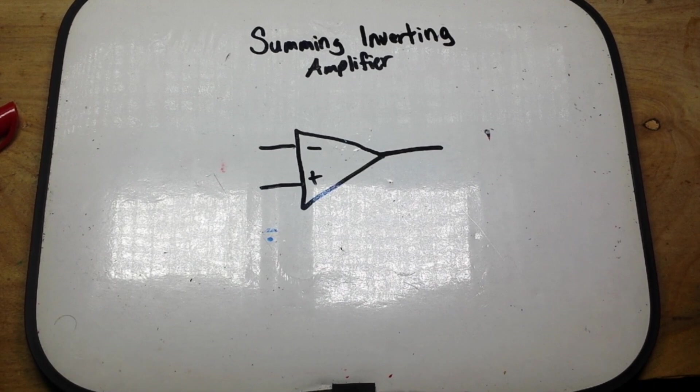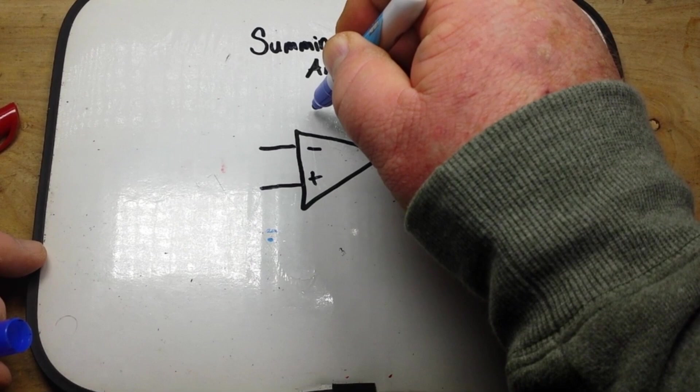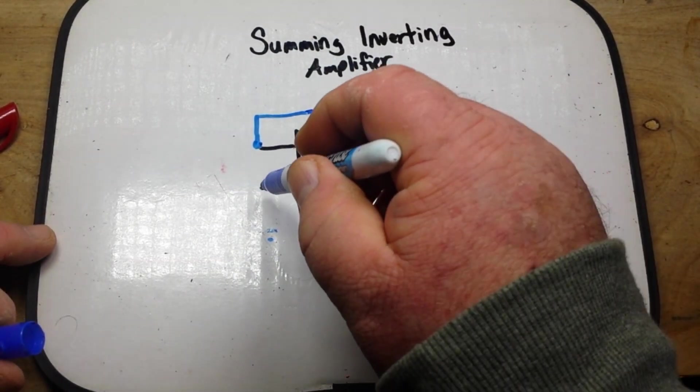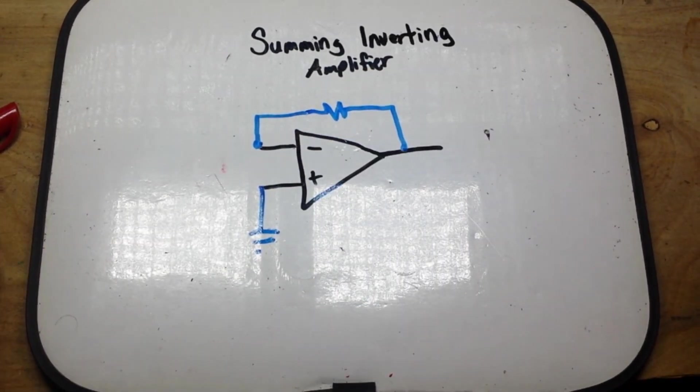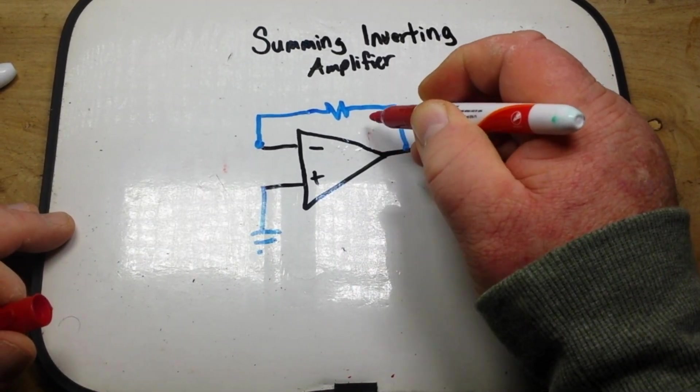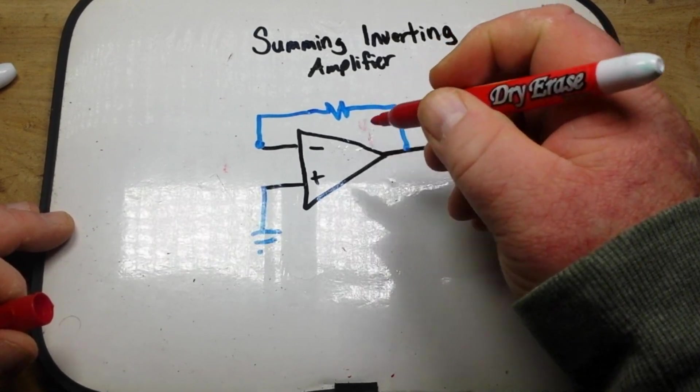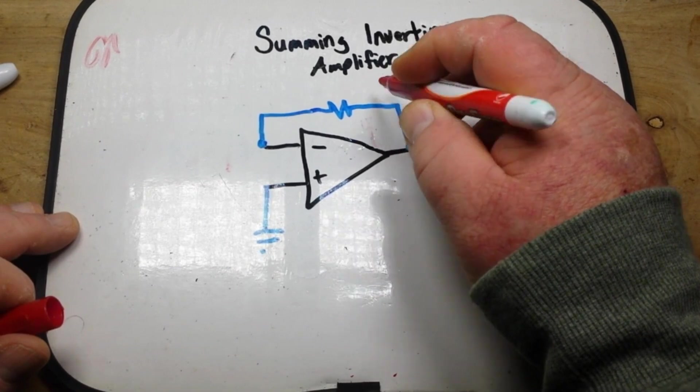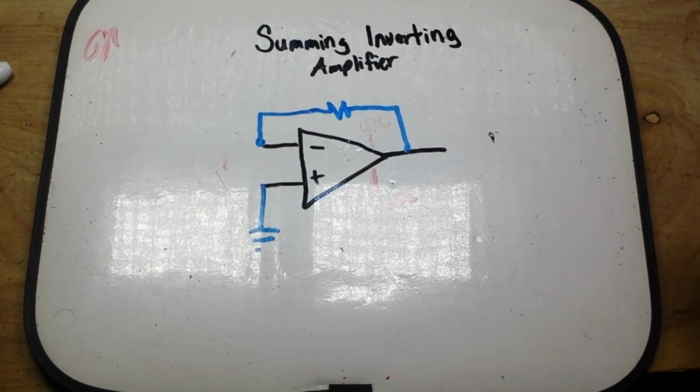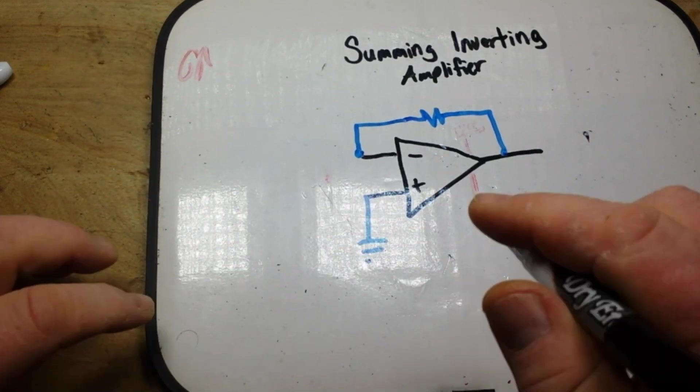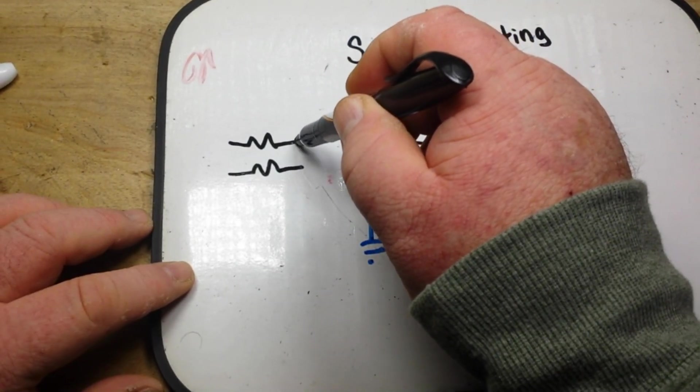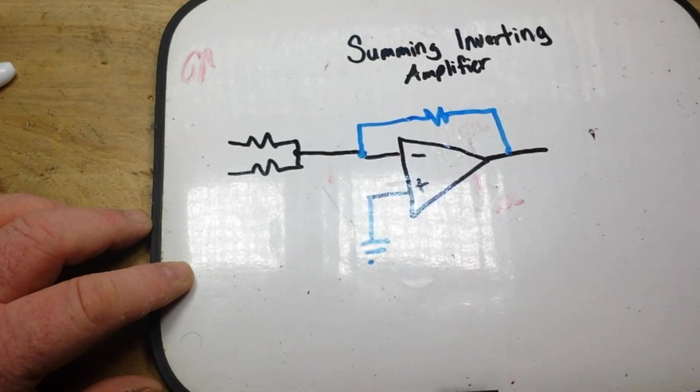So first of all, to make our inverting amplifier we need our feedback resistor into the inverting input, and the non-inverting input we tie to ground. So that is our standard super simple little inverting amplifier. Of course, VCC and minus VCC. Sorry I don't know why my red pen is not working. Now the summing inverting amplifier.